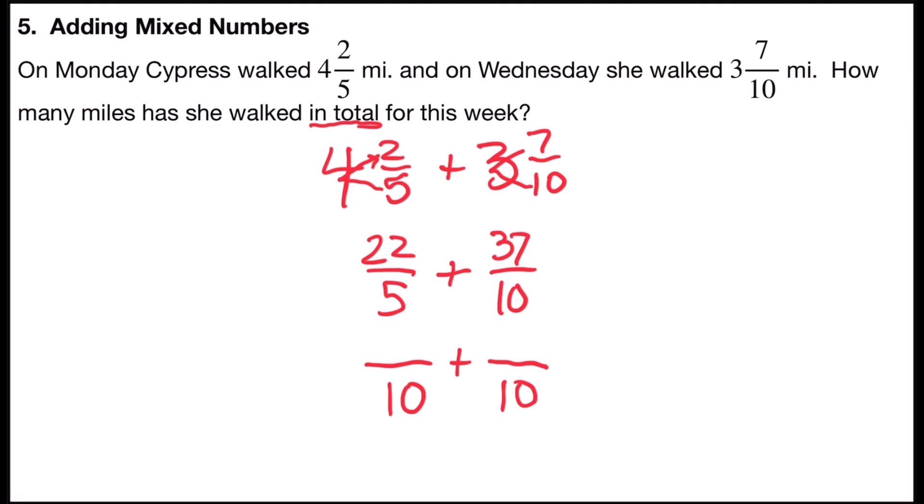So now I'm going to rename the numerators. Five times what number is ten, and that's two, so I'm going to multiply by the form of one, two over two. Two times twenty-two is forty-four, so twenty-two-fifths is the same thing as forty-four-tenths.